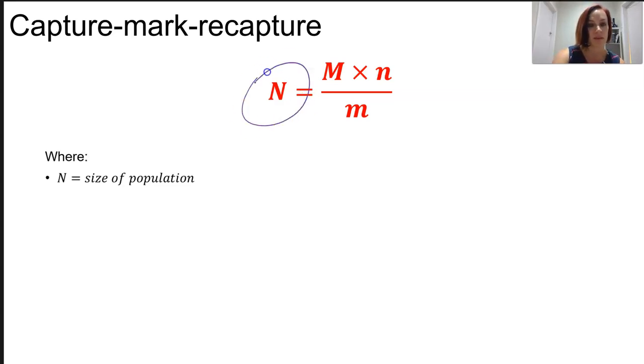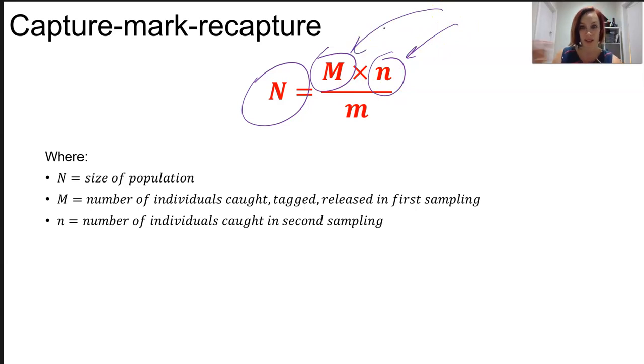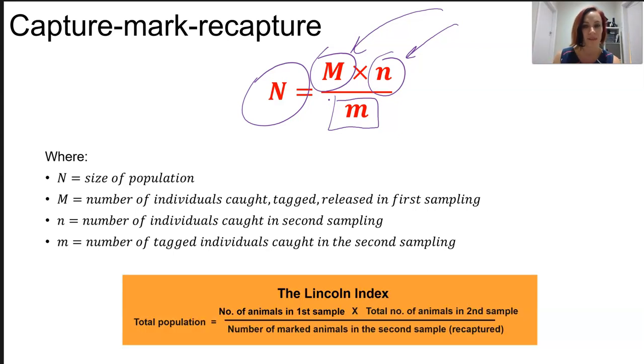If this is our formula, the capital N stands for the size of the population - that is what we are trying to figure out. We then have to look at the number of individuals we caught to start with and the number of individuals caught the second time. These are the numbers of what you've actually taken in your nets or your traps. The little m, however, is the number of tagged individuals that you found on the second capture. It can be written like this: you're looking for the total population, the number of animals in the first sample, the number in the second sample, and that is divided by the number of marked animals.